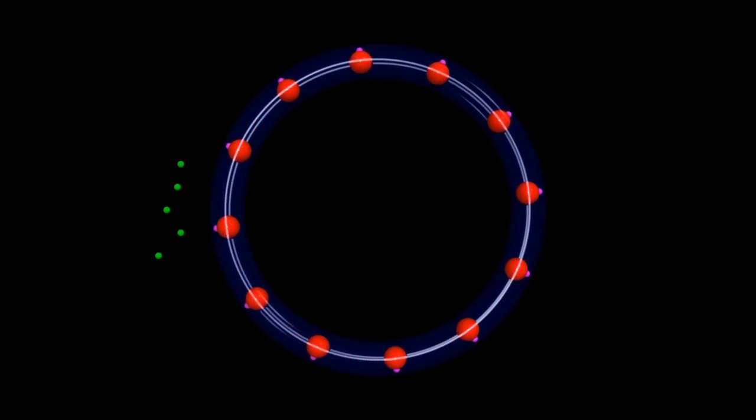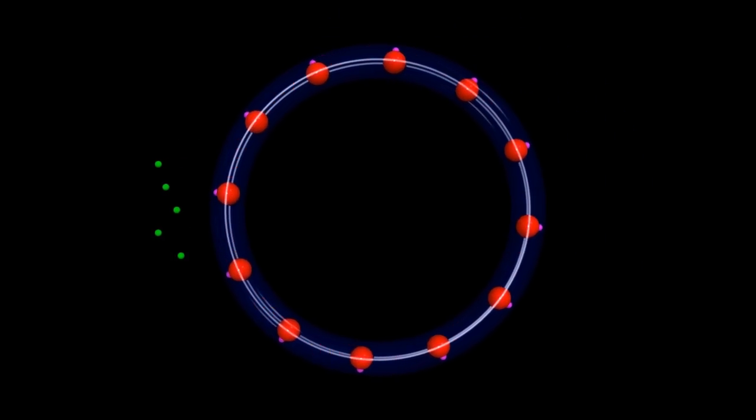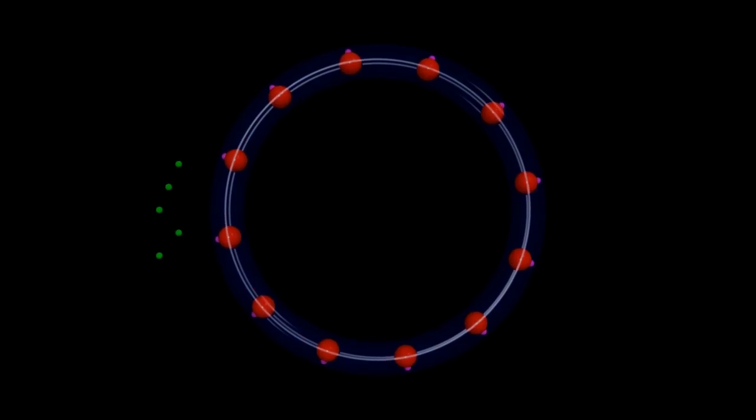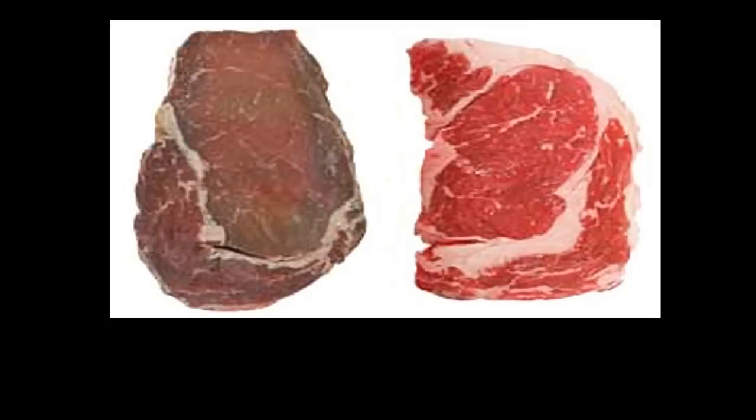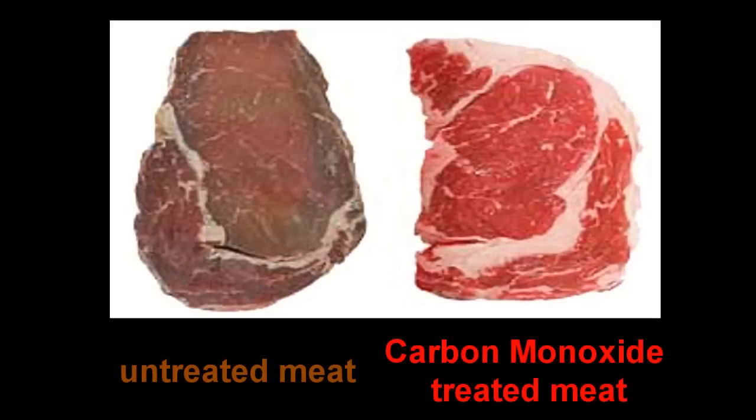Interestingly, when hemoglobin is poisoned by carbon monoxide, it goes very red, much redder than when it's bound to oxygen. And this is a trick used by many meat packing plants to make the meat appear redder, which people erroneously in this case associate with freshness.